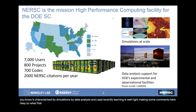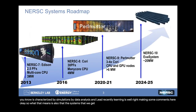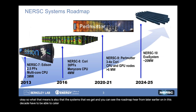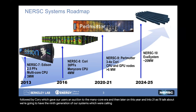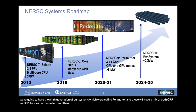The systems that we get have to be able to cater to that really diverse workload. Starting in 2013, we had Edison, then followed by Cori, which gave our users an introduction to the many-core era. Later on this year and into 2021, we're going to have the ninth generation of our systems, which we're calling Perlmutter. And then later on in this decade, we'll get into NERSC 10.